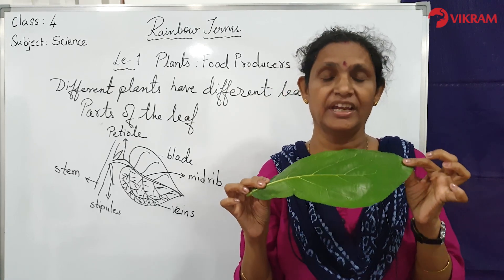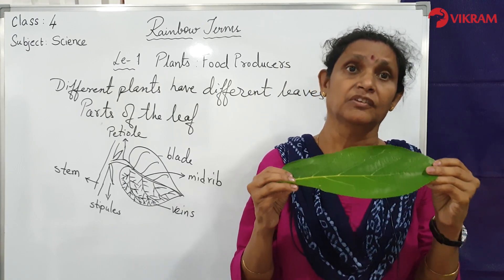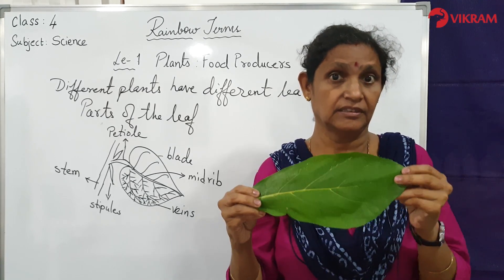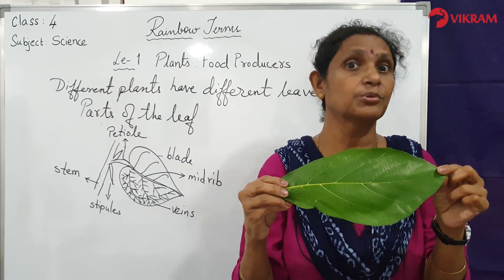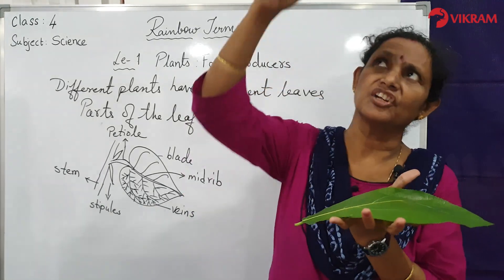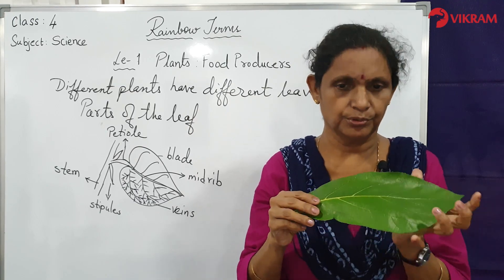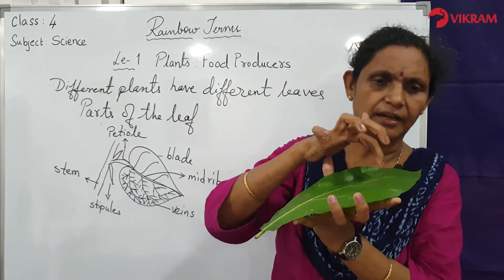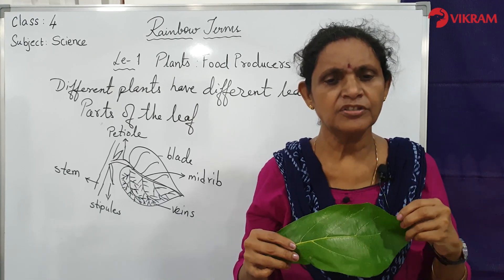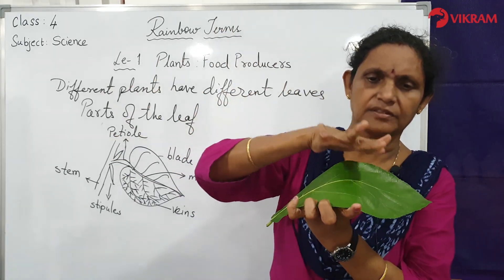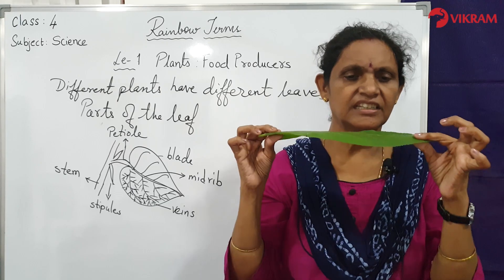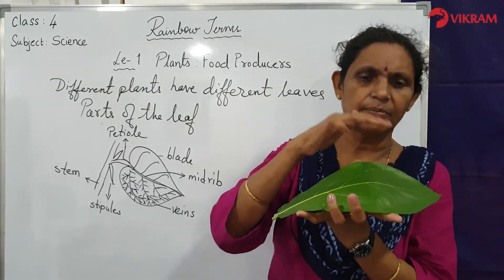Children, now you know why leaves are so important. They produce food not only for the plant, but also for animals, birds, and human beings. The leaves use solar energy — sunlight — to make food. Air enters the leaf through the stomata and moves into tiny spaces around the food-making cells. Carbon dioxide from the air passes through the cell walls and membranes, where it is converted into sugar.